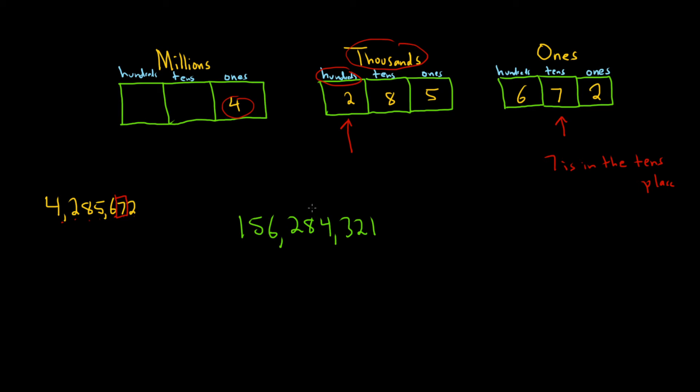So for example, if we pick just the 8 here, we know it's going to be in the tens place because it's the second digit, right? Ones, tens, hundreds. But it's also in the thousands place. So this is in the ten-thousands place.